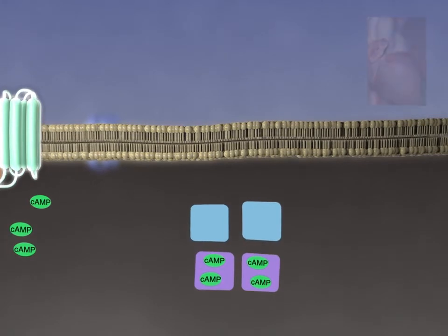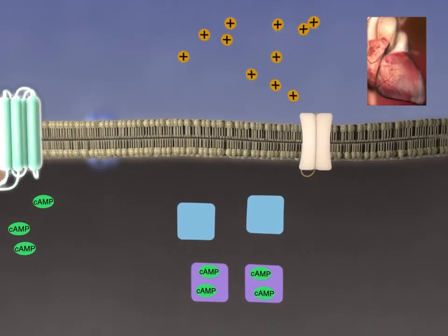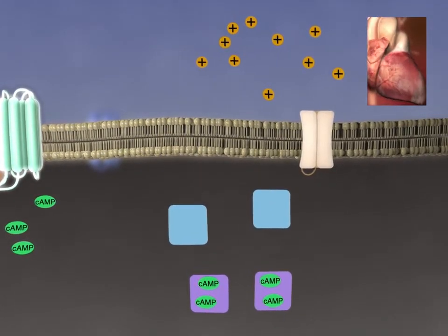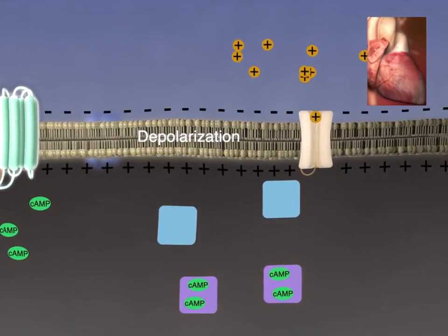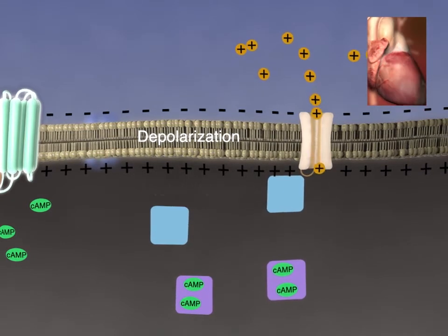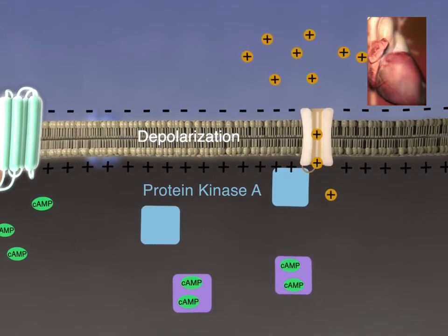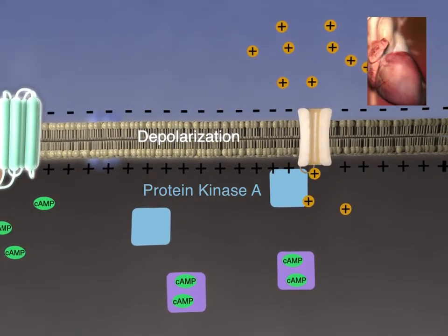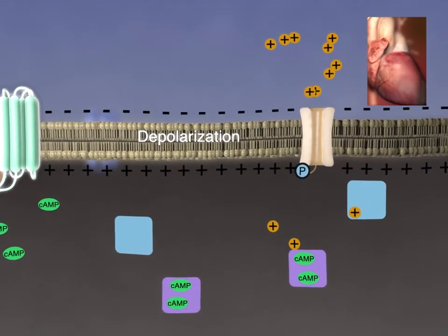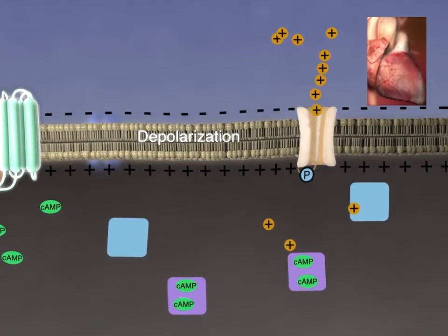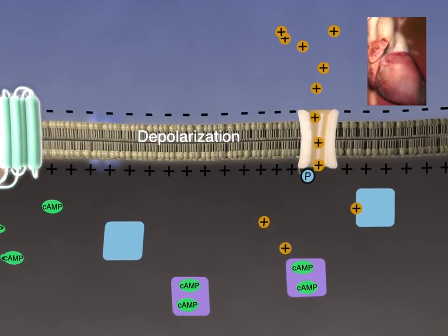PKA is a tetrameric enzyme composed of two regulatory subunits and two catalytic subunits. When two cyclic AMP molecules bind to each of the regulatory subunits, they dissociate from the catalytic subunits that are then able to phosphorylate substrate molecules in the cell.